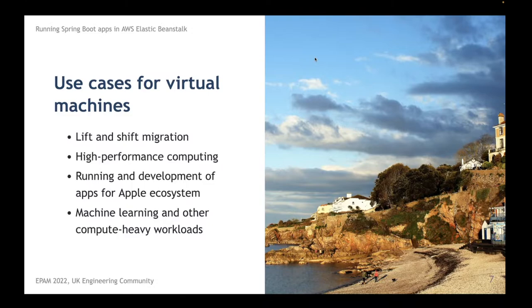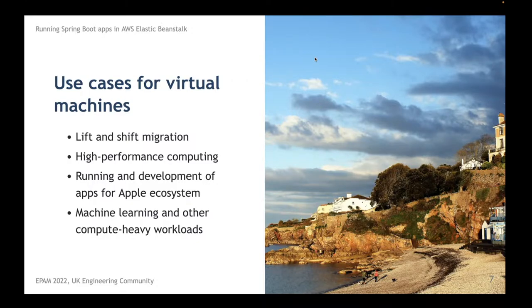Another important option available in EC2 is running and developing applications for the Apple ecosystem. Unfortunately, you cannot run something like a Pages application on an ordinary Linux or Windows machine because you need proper underlying hardware. You cannot run Xcode on an ordinary Windows PC, so you need a virtual machine hosted on top of Apple hardware. AWS is one of the first cloud providers to provide Apple hardware to clients. Machine learning or any other workload requiring GPU support is also a good fit for EC2 instances.